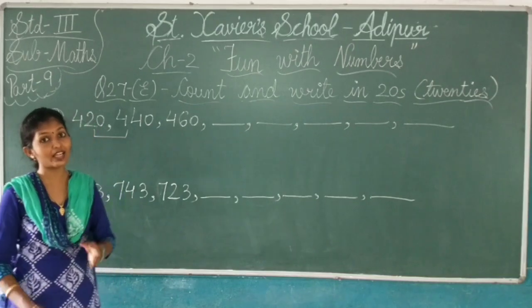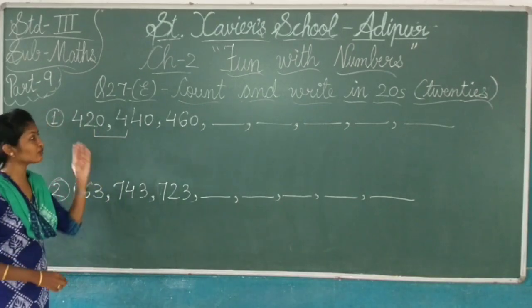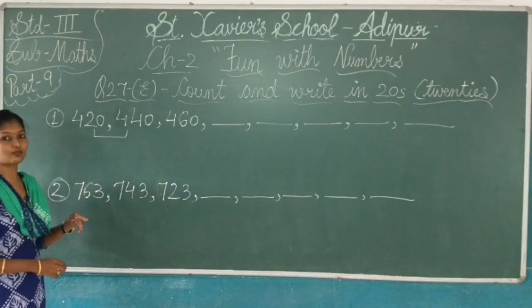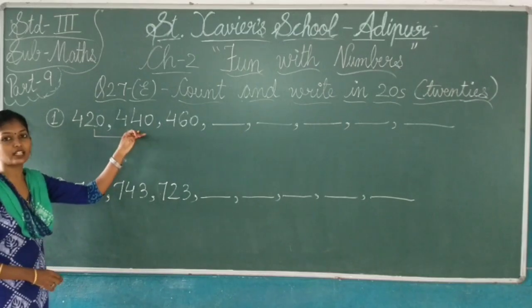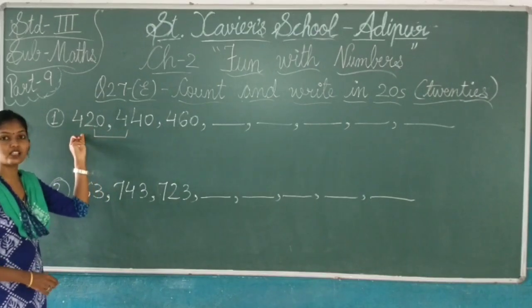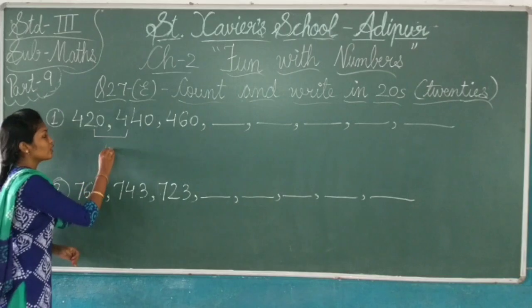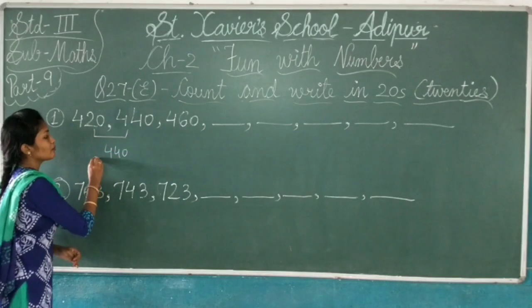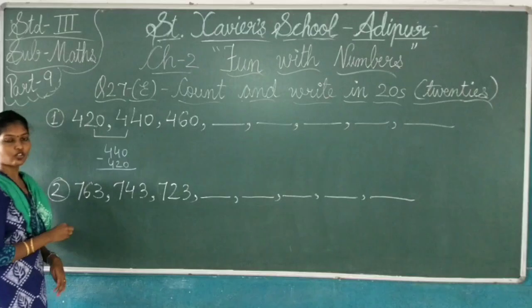We will add. So first let's find out the difference between them. Greater minus smaller. So 440 is the greater number and 420 is the smallest number. So what will I do? 440 minus 420.